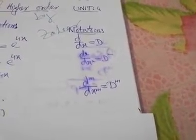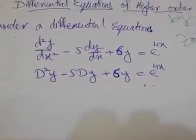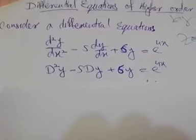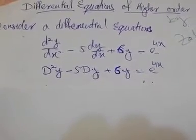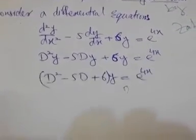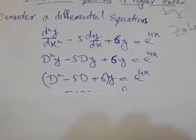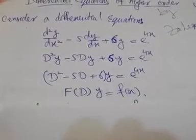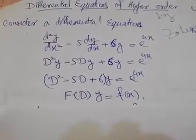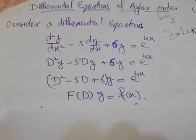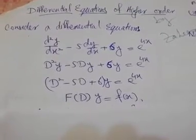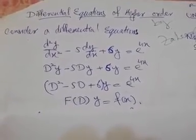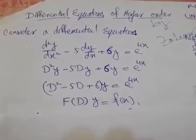d^m/dx^m raised to power m equals D raised to power m. If we write the given differential equation in operator form, it looks like D²y minus 5Dy plus 6y equals e raised to power 4x. Taking y common, we read this as f(D) on y equals f(x), where f(D) equals D² minus 5D plus 6.